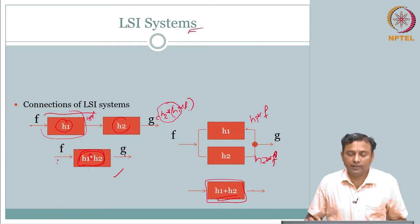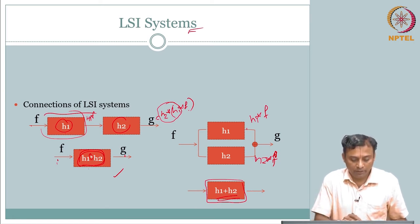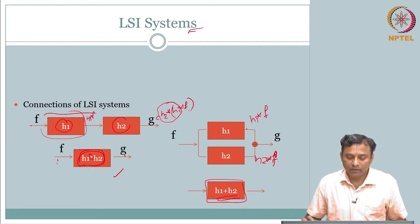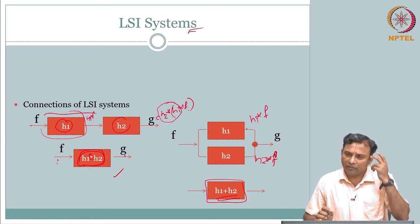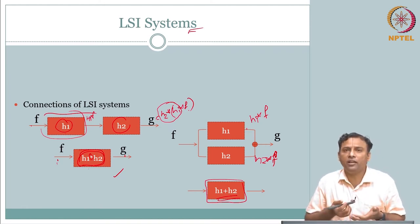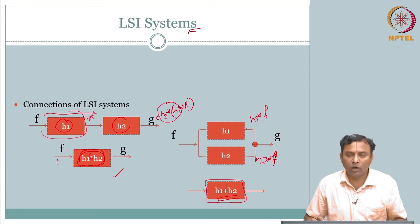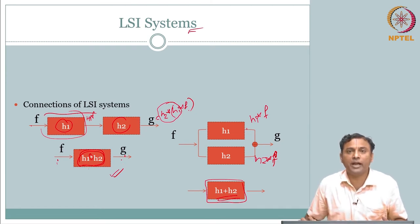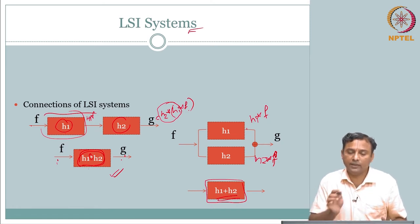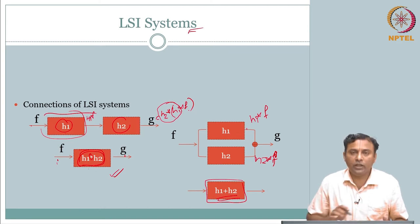Having looked at linear shift-invariant systems and how to characterize them, we talked about convolution being an important operator. We are talking about f(x) and g(x) which are all in the spatial domain, and we use the convolution property. We discussed how the system transfer function concept, system impulse response, and point spread function connect your input and output through the convolution operator.